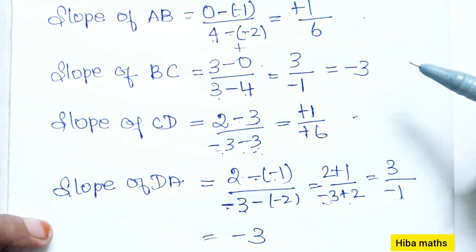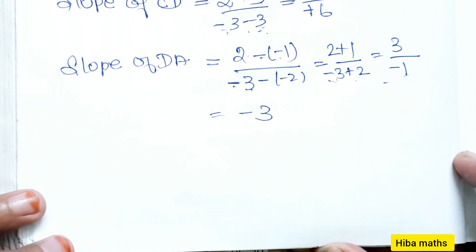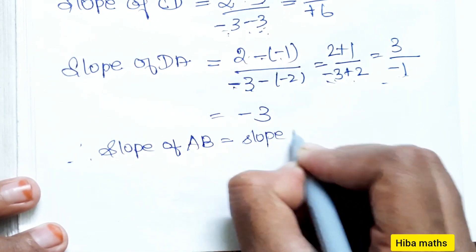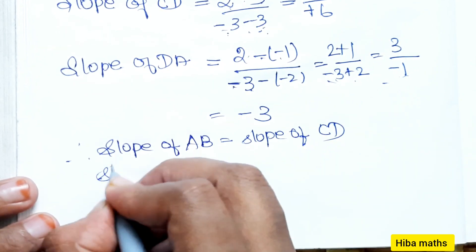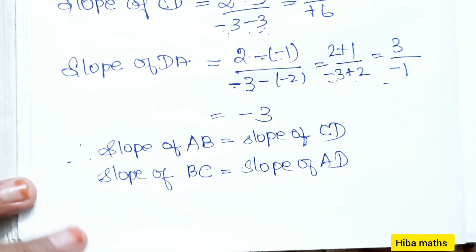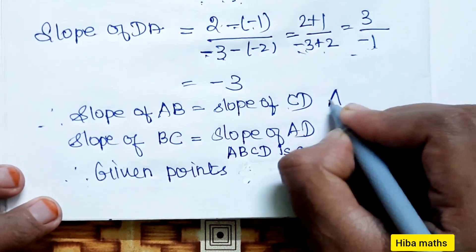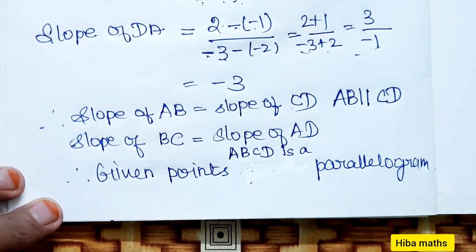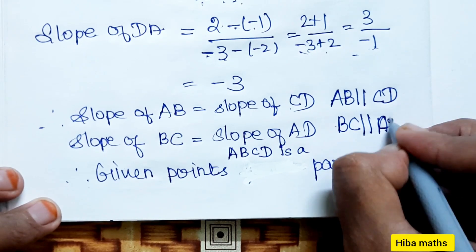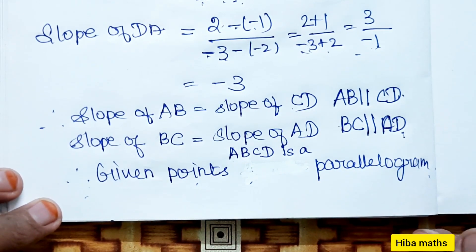Comparing: slope of AB equals slope of CD (both 1/6), and slope of BC equals slope of AD (both -3). Since both conditions are satisfied, AB is parallel to CD and BC is parallel to AD. Therefore, the opposite sides are parallel, and the given points A, B, C, D form a parallelogram.